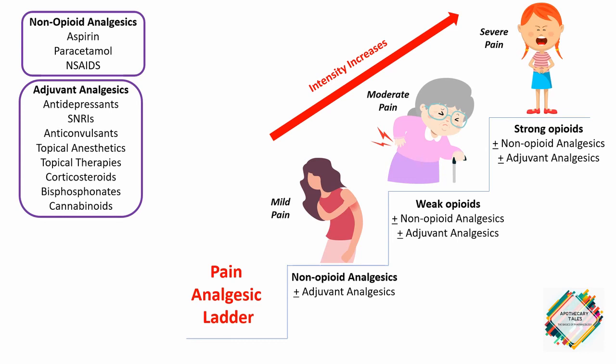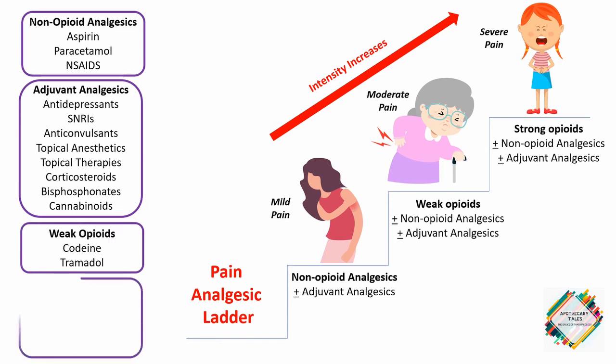Talking about the weak opioids, which include codeine and tramadol. And talking about the strong opioids, it includes morphine, fentanyl, buprenorphine, and methadone. So keep in mind how we initiate the drug therapy in pain management.